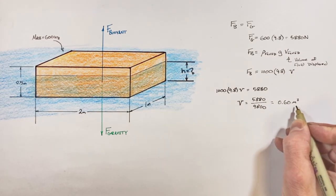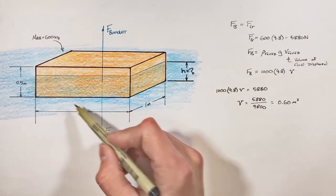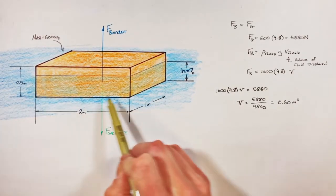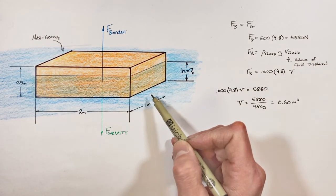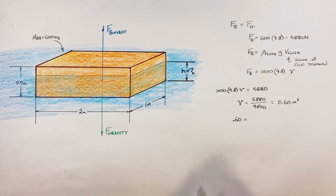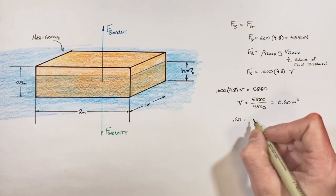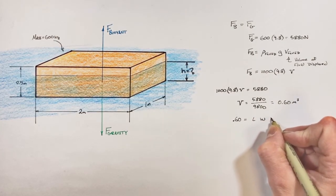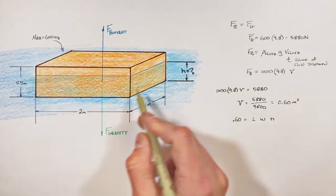we find 0.6 meters cubed of water which is displaced by this block. Now realize that means that there's 0.6 cubic meters of block underneath the water. So this volume of 0.6 meters cubed is going to be the length times the width times the height of block which is submerged underneath the water.